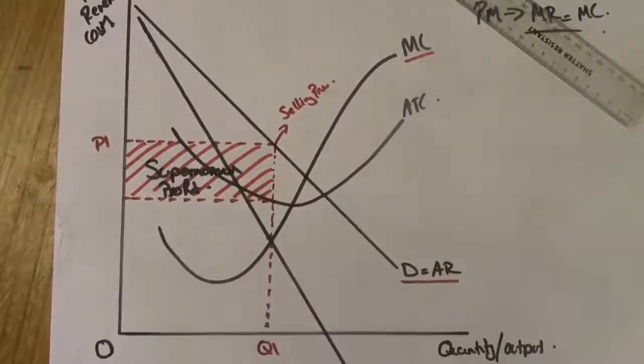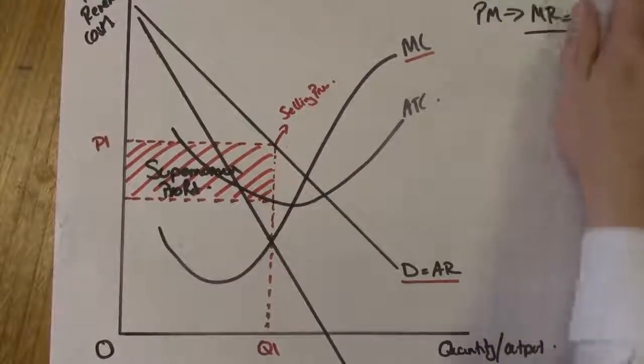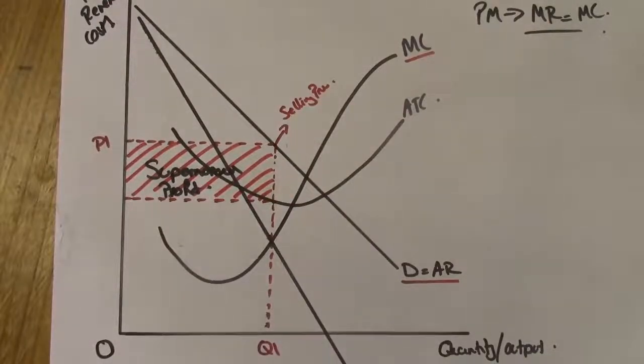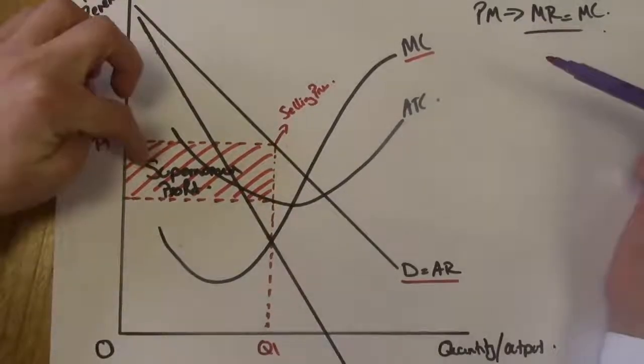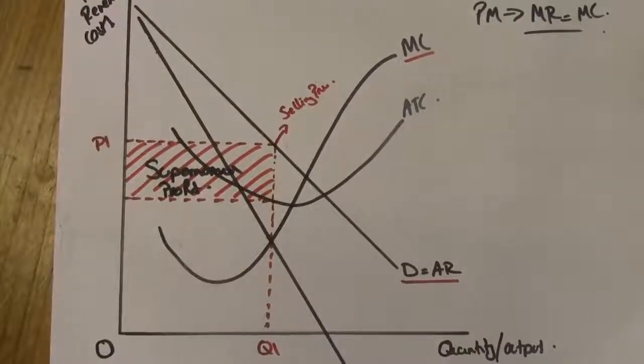Now what do firms do with this level of supernormal profit? Well, they can do many things with that. Notably, they can use it to attract shareholder investment. Shareholders will be attracted to this degree of supernormal profit. They could reinvest that into research and development, for example, being more dynamically efficient. They could reinvest it into technological change and they could make their current operations more effective, more efficient, better quality of service, for example.